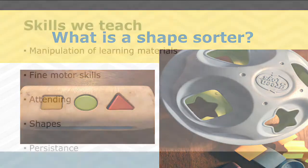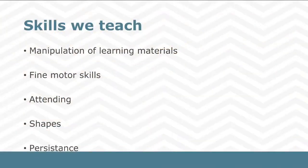So what skills are we teaching our children when we're teaching them to complete a shape sorter? First thing, we're teaching them object manipulation of learning materials. That is, learning materials have a designated purpose and we use them to learn new skills. Also we're teaching our kids fine motor skills, attending skills, learning to look at something for a prolonged period of time and figuring out how it works. We're also teaching them different shapes and how to be persistent with things when it doesn't initially work for us.